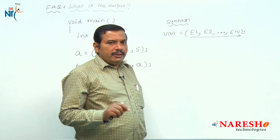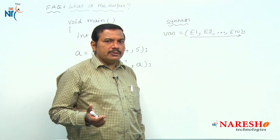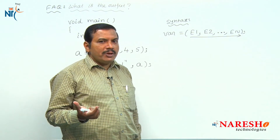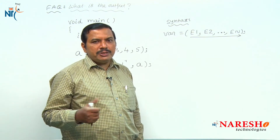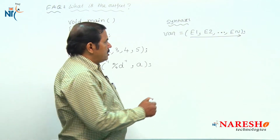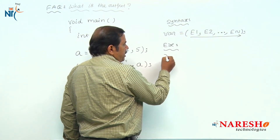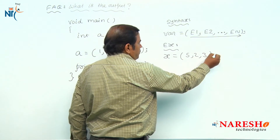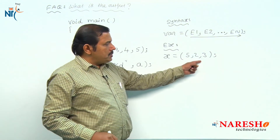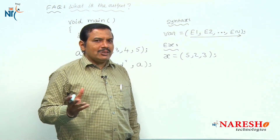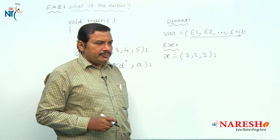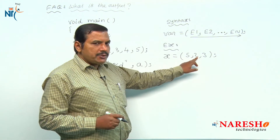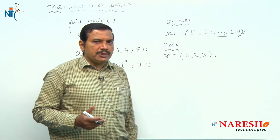For the comma operator, the operands may be variables, constants, or any type of complex expression. For example: x = 5, 2, 3. In this example, constants are used as operands. The value of the first expression is 5, the second is 2, and the third is 3.